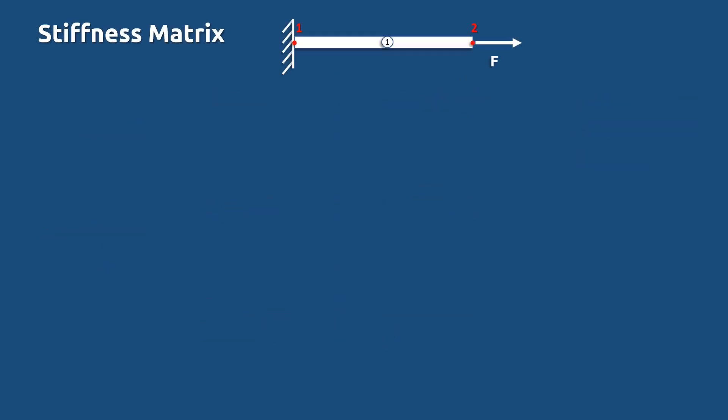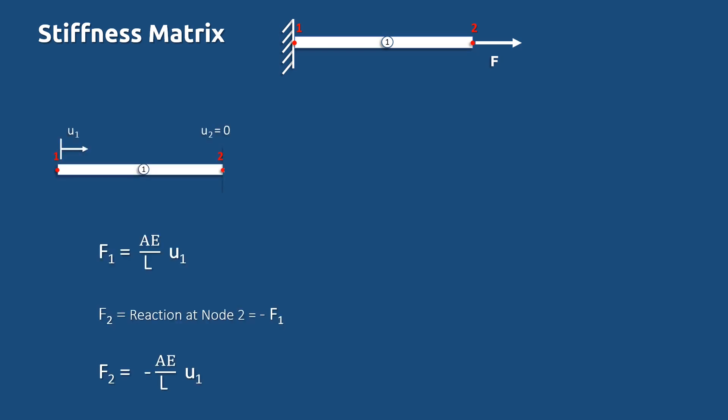In finite element analysis, the member is divided into a finite number of elements. Here we see a bar loaded at one end, taken as one element with two nodes. Let's find the stiffness of this bar. Assume a displacement U1 produced at node 1 and zero displacement U2 at node 2. Let F1 be the force required to produce U1. Then F1 equals (AE/L) times U1. Let F2 be the force required to produce zero displacement U2. To produce zero displacement, F2 is a reaction, equal in magnitude and opposite in direction to F1.